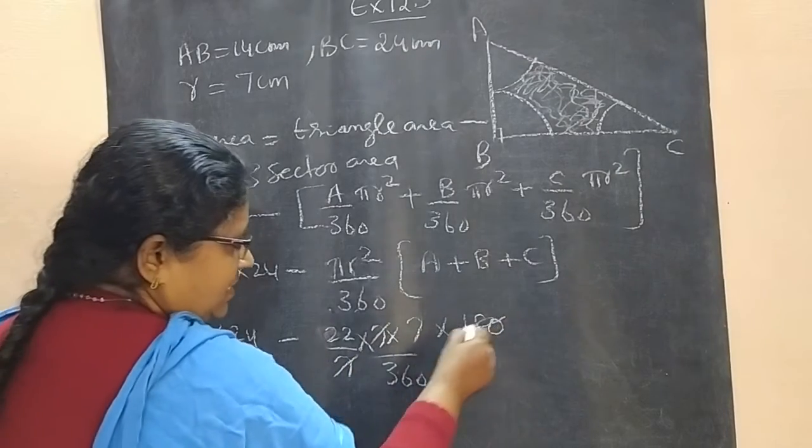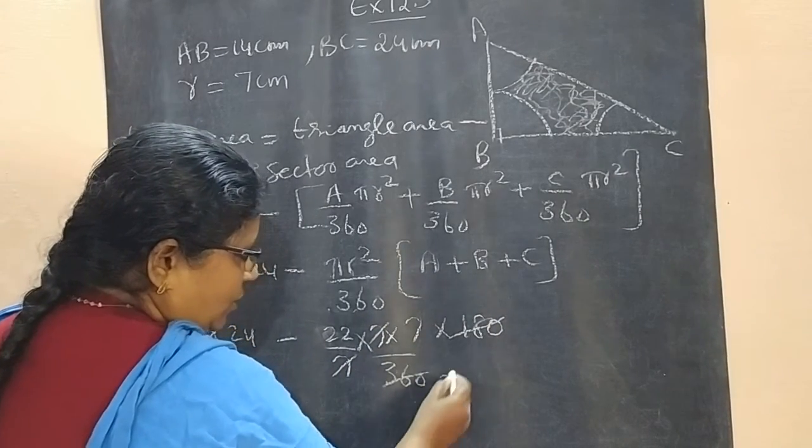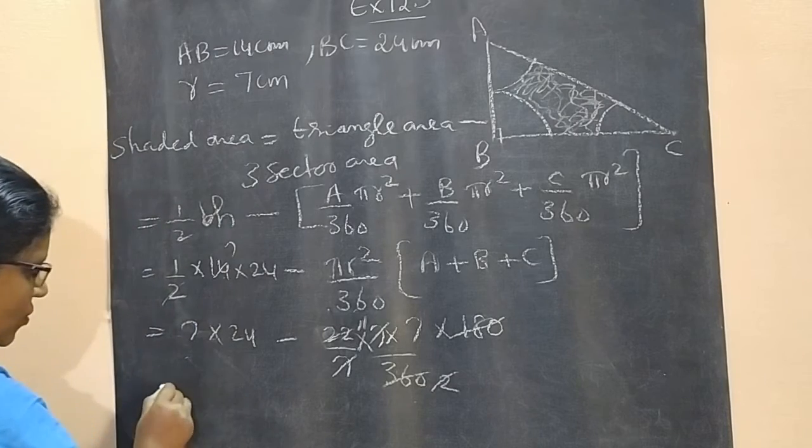A plus B plus C is 180. 7 and 7 cancel. 180 and 360 cancel to 2. 22 cancel to 11.